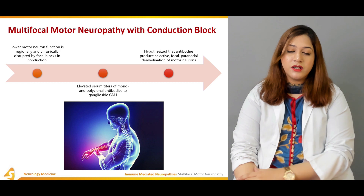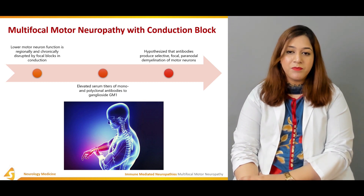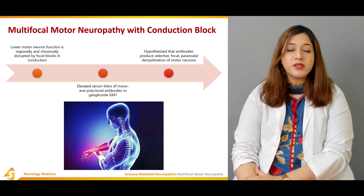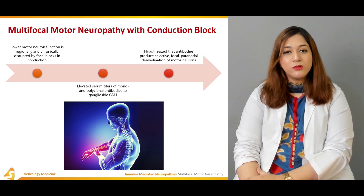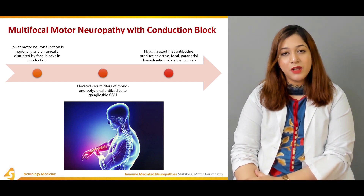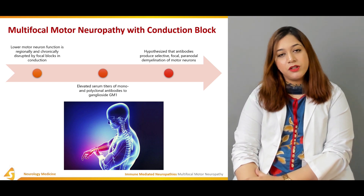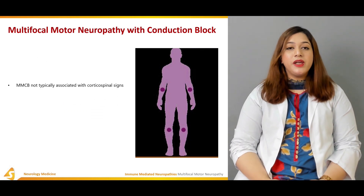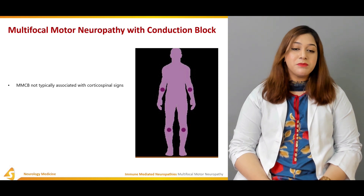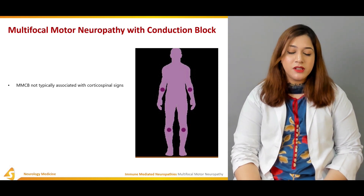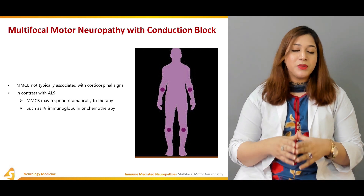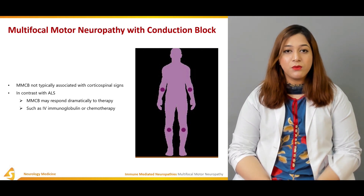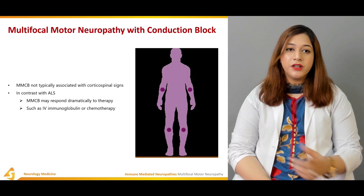Because of these findings, it is hypothesized that GM1 ganglioside antibodies produce selective, focal, paranodal demyelination of motor neurons, involving the paranodal areas of the peripheral nervous system. Multifocal motor neuropathy with conduction block is not typically associated with corticospinal signs. In contrast with amyotrophic lateral sclerosis, it responds dramatically to therapy with intravenous immunoglobulins or chemotherapy.